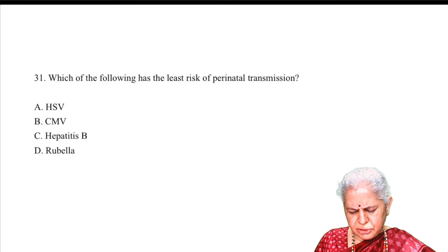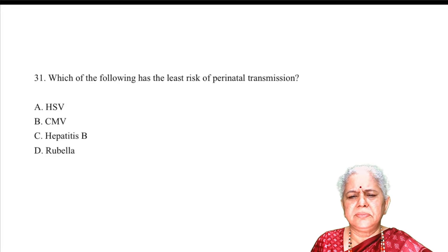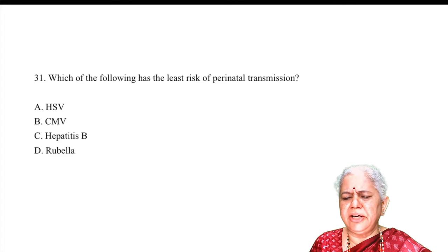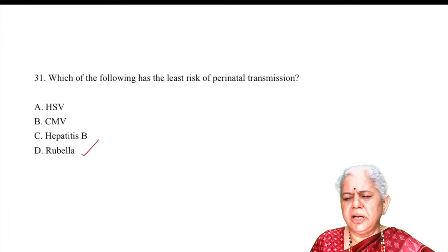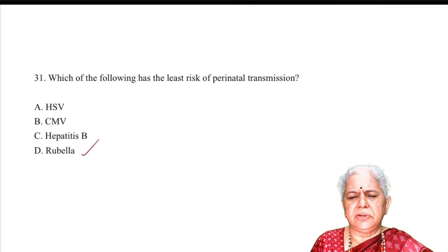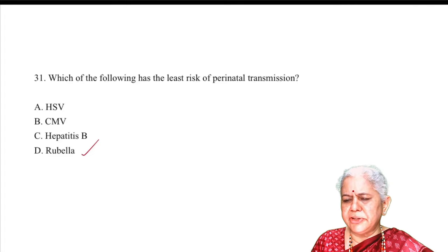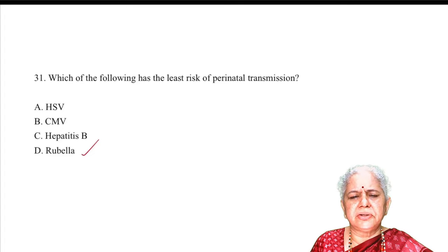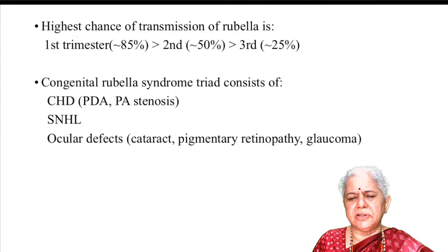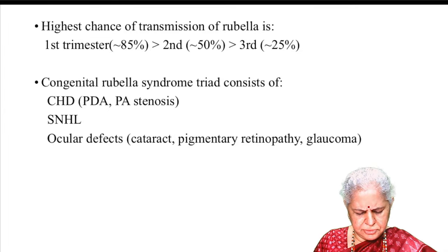Question: which infection has the least risk of perinatal transmission? Answer D — rubella. Rubella risk is maximum in the first trimester; towards the end of pregnancy it becomes less and less, and is not perinatally transmitted. Congenital rubella produces PDA, sensorineural deafness, arthritis, congenital heart disease, and cataract — all related to first trimester infection.